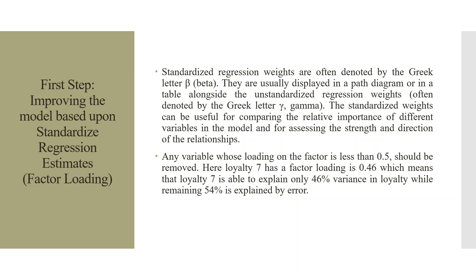The first step is improving the model based upon the standardized regression estimates, also known as factor loading. Standardized regression weights are often denoted by the Greek letter beta, and are usually displayed in a path diagram or table alongside unstandardized regression weights, often denoted by the Greek letter gamma. The standardized weights are useful for comparing the relative importance of different variables. Any item whose loading on the factor is less than 0.5 should be removed.